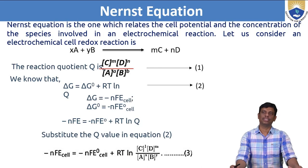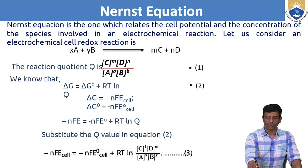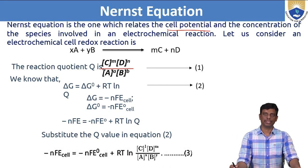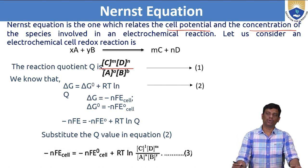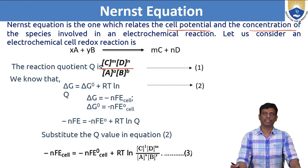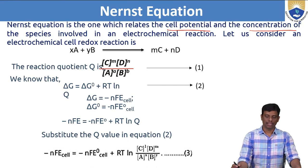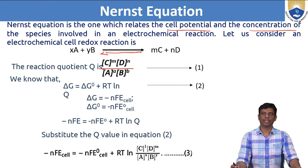In the Nernst Equation derivation, the Nernst Equation relates the cell potential to the concentration of species involved in the electrochemical reaction. We consider a general electrochemical redox reaction — an electrolytic or electrochemical cell where oxidation-reduction takes place, which we call a redox reaction.